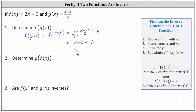It's not enough for one composite function to equal x to determine if two functions are inverses — we have to find both composite functions. So now we determine g of f of x. We begin with the inner function f of x, and because there's no numerical value as an input, we replace f of x with the function rule of 2x plus 3, indicating g of f of x equals g of the quantity 2x plus 3.